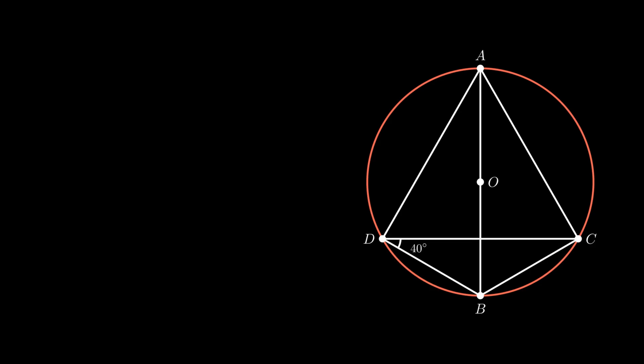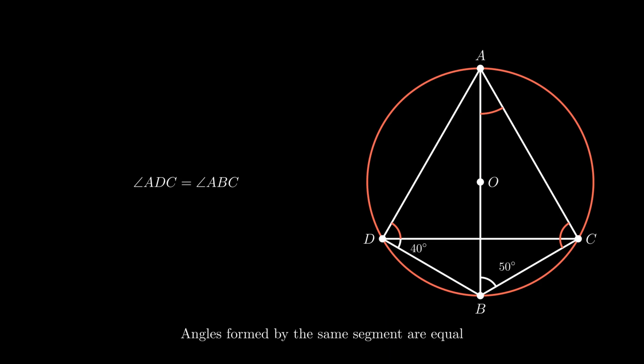Moving on to the next one. Consider a cyclic quadrilateral ABCD with center point O such that the measure of angle BDC is 40 degrees and angle ABC equals 50 degrees. We need to find the measures of angle ADC, angle ACB and angle BAC. As angle ADC and angle ABC are formed by the same segment AC, therefore by using the theorem that angles formed by the same segment are equal, angle ADC equals 50 degrees.